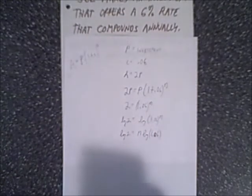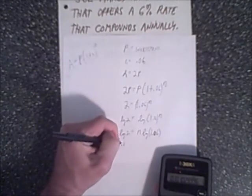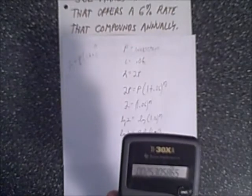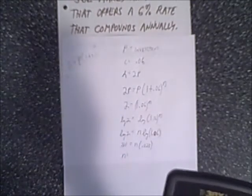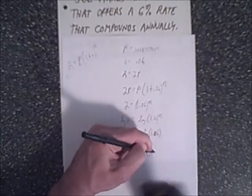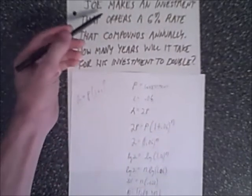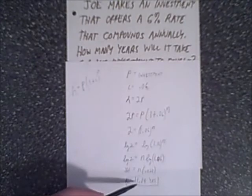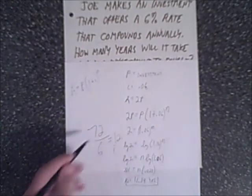Going to our calculator, the log of 2 is .301, and the log of 1.06 is .025. And so N will equal 11.89, and this is years because the investment is compounding annually, so we're using years. Let's go back to our question. Joe makes an investment that offers 6% rate compounded annually. How many years will it take to double? It will take 11.89 years, which going back to the rule of 72, 72 divided by 6 equals 12. And notice how close our answer is. So that is correct.